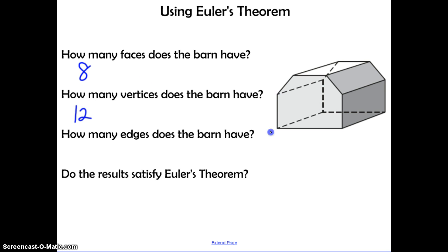And when you count the edges along the front, the edges along the back, and all the edges that go around, we have a total of 18. So we want to see if the results satisfy Euler's Theorem. So we take the number of faces plus the number of vertices equal to the number of edges plus 2. This is 20 equals 20, so it works.